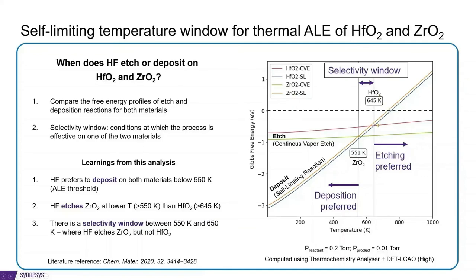For hafnia, the two curves intersect at 645 Kelvin, and for zirconia, they intersect at 551 Kelvin. So above 645 Kelvin, both materials will be etched by HF, and below 551 Kelvin, self-limiting reaction will proceed on both materials. Between the two temperatures, there is a selectivity window, where hafnia will self-limit, but zirconia will etch.